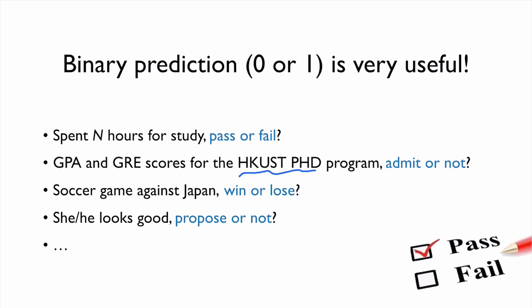Or we have a soccer game against Japan. Are you going to win or lose? And then she or he looks pretty good, so do you want to propose or not? In these cases, we just need binary prediction. Either you want to do it or not doing it, 0 or 1.